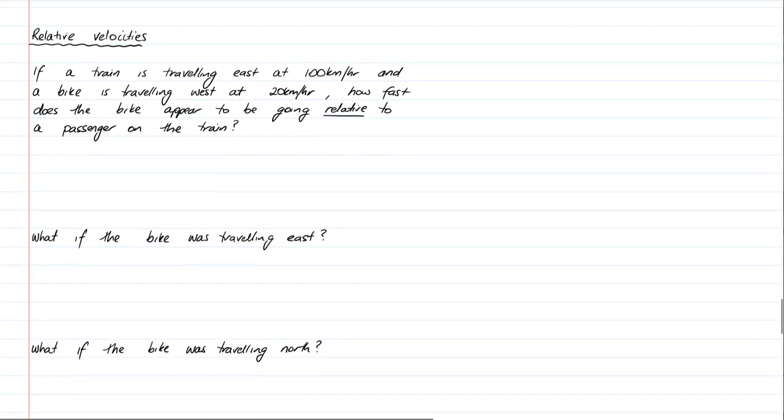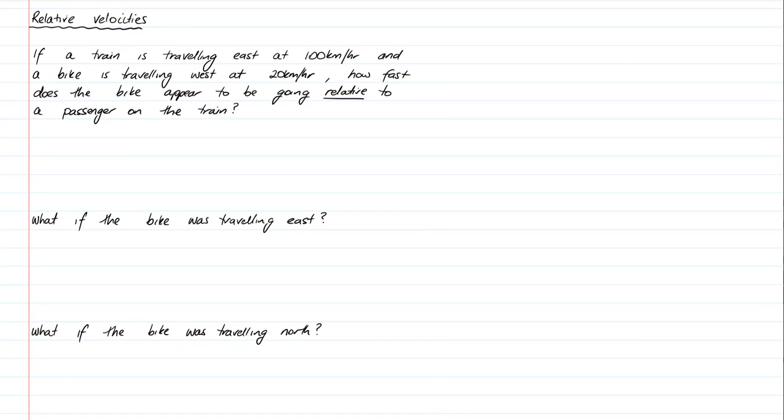So relative velocities. If a train is travelling east at 100km an hour, and a bike is travelling west at 20km an hour, how fast does the bike appear to be going relative to a passenger on a train? So the passenger on a train is 100km an hour, and the person on the bike is 20km an hour. But to the passenger on a train, who feels like they're motionless, the person on the bike is travelling at 120km per hour west.